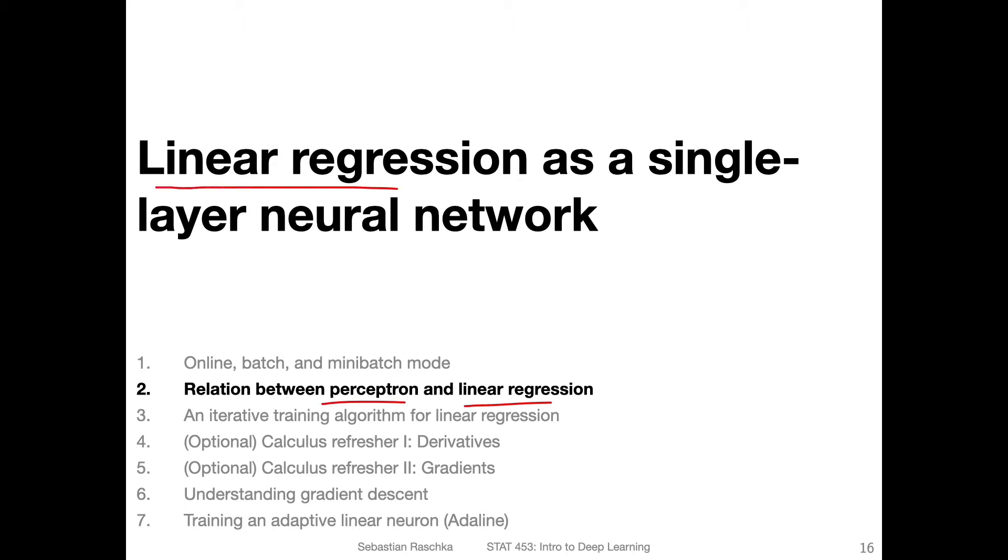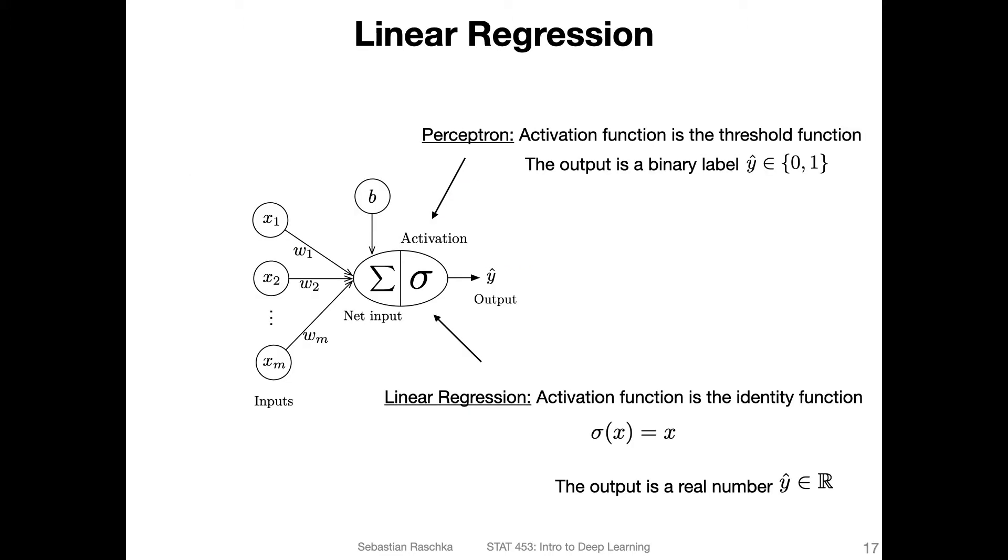You can think of linear regression as a single layer neural network. Since you hopefully know linear regression, this will make things easier when we talk about gradient descent and the adaptive linear neuron. This video will briefly outline this relationship before we discuss it more in following videos.